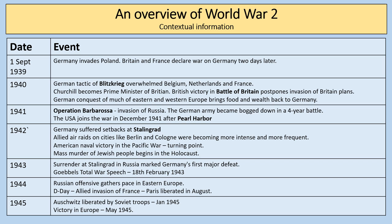In 1943, the surrender at Stalingrad in Russia marked Germany's first major defeat. That led to Goebbels' total war speech at the Sports Palace in Berlin on the 18th of February 1943. In 1944, the Russian offensive gathered pace in Eastern Europe. On D-Day in the West, the Allied invasion of France took place and Paris was liberated in August 1944. In 1945, the war had turned decisively in favour of the Allies. Auschwitz was liberated by Soviet troops in January 1945, and victory in Europe took place in May 1945 with Adolf Hitler committing suicide a few days before.